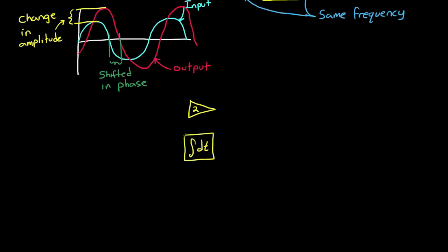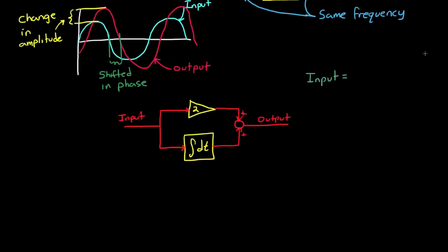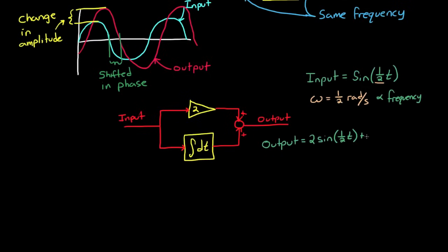Let me give you a quick example so you can see what I mean. If we take an input sine wave and subject it to two separate paths — the upper path is just multiplying it by a constant 2, and the lower path is integrating it — and then summing them together produces the output. If we make the input a pure sine wave of frequency one-half radians per second, then we can just calculate mathematically what the output would be. The output would then be the upper path, which is a gain of 2 times the input, plus the integral of the input with respect to time. We can simplify this further by just taking the integral in the second half of the equation.